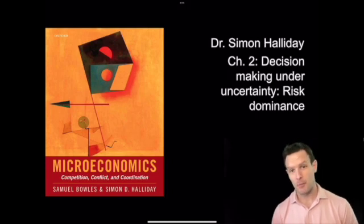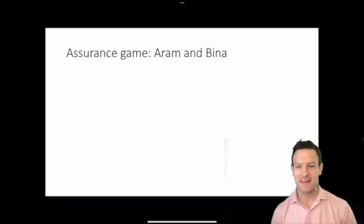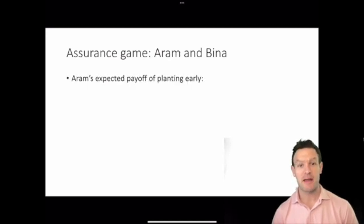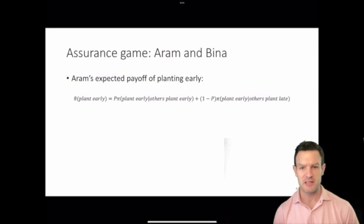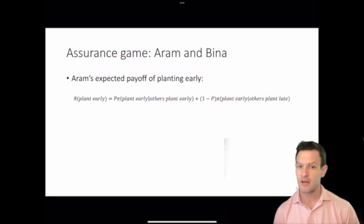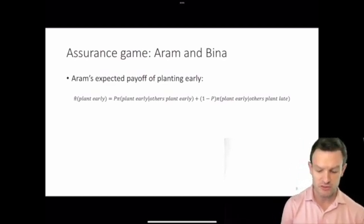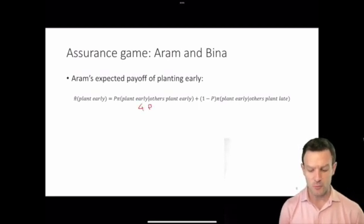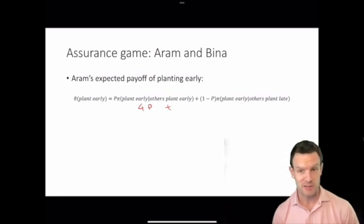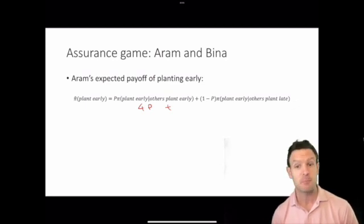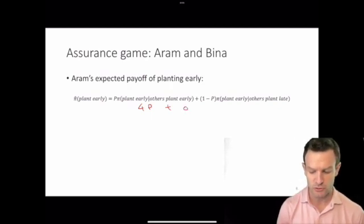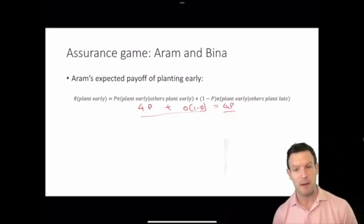Hi everyone. Here we're going to talk about decision-making under uncertainty and risk dominance. Remember that in the assurance game between Aram and Bina, we were calculating the expected payoffs for each of the players. For Aram, the expected payoff of planting early was equal to P — the probability that Bina would play plant early — multiplied by the payoff Aram would receive when both planted early. This was equal to 4 times P, plus 0 times (1 minus P), so the expected payoff to playing plant early equaled 4P.